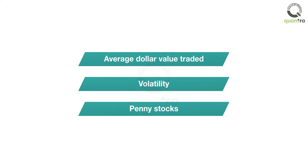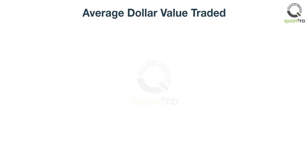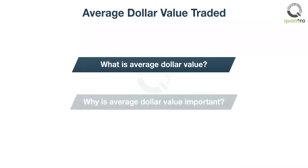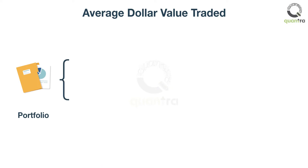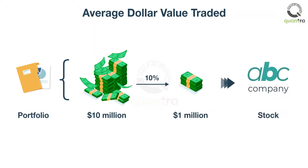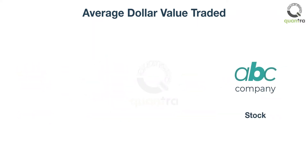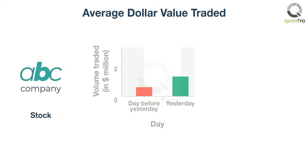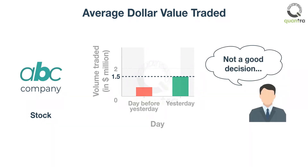The first criteria is the average dollar value traded. Imagine your portfolio size is 10 million dollars, and you want to allocate 10% of the capital, or 1 million dollars, to stocks of ABC Company. However, you check the dollar volume traded of the company, and it was only 1.5 million dollars the previous day. Thus, buying and selling 1 million dollars worth of stocks would have a detrimental effect on the price, as traders could use it to their advantage.